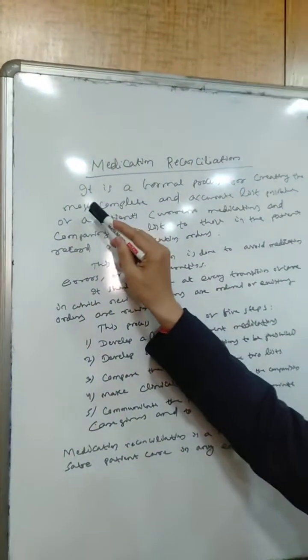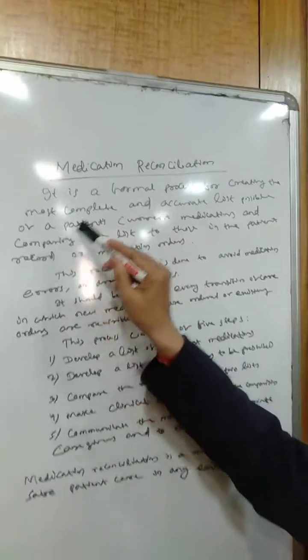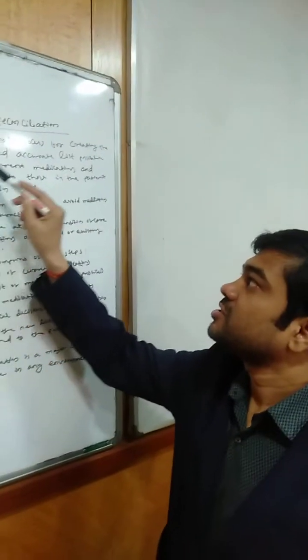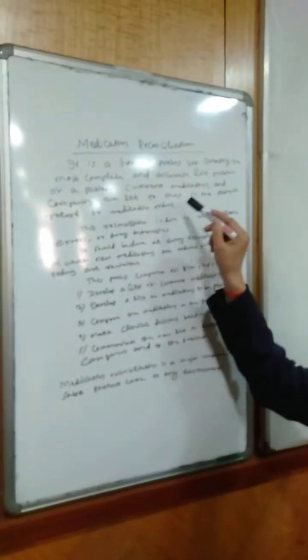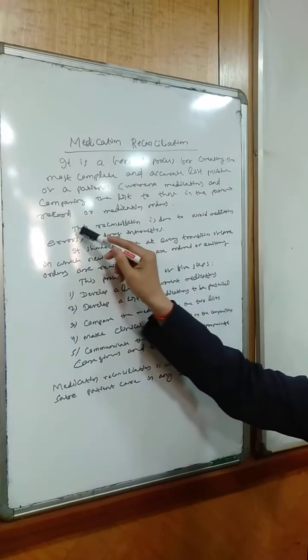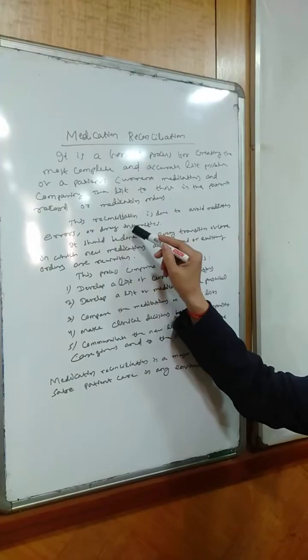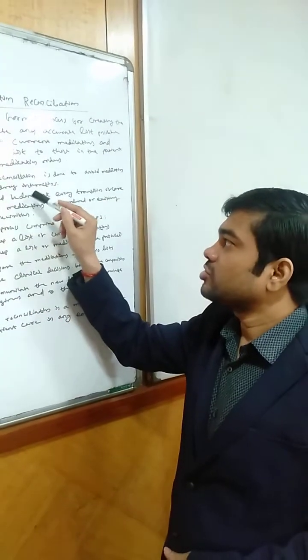We know that medication reconciliation is a formal process for creating the most complete and accurate list possible of a patient's current medications and comparing the list to those in the patient record or medication orders. And this reconciliation is done to avoid medication errors or drug interactions.